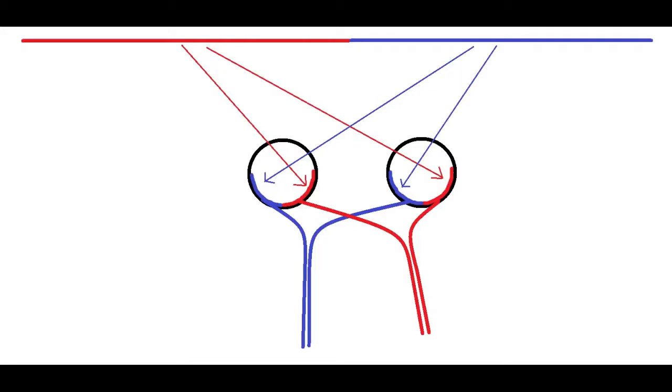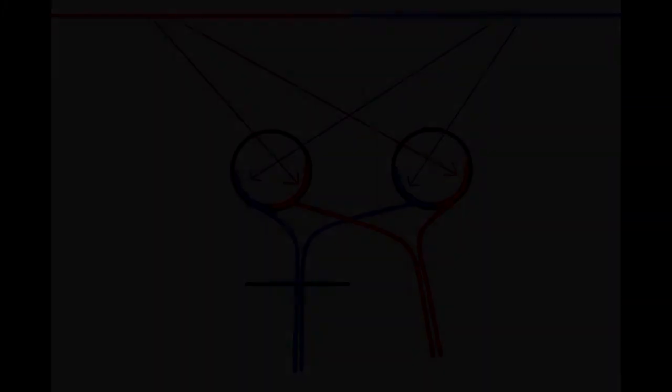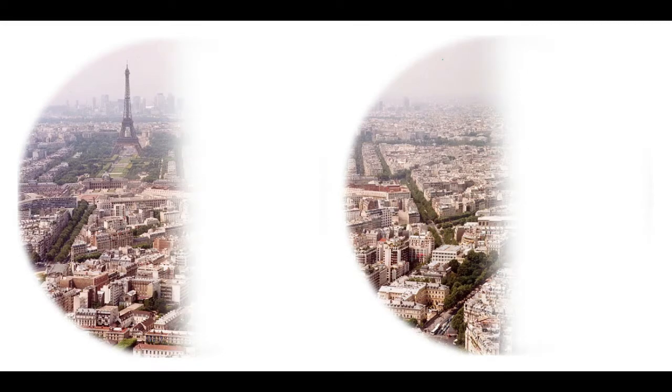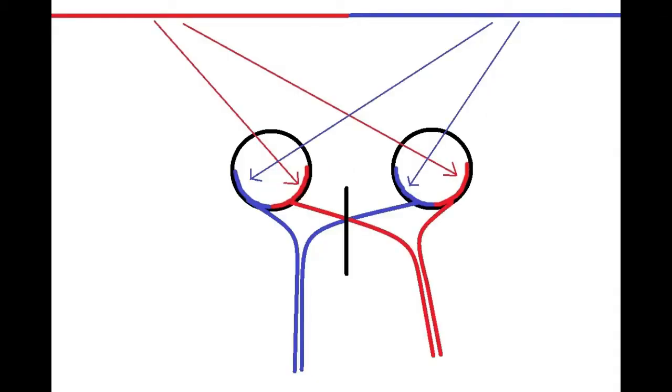Severing the optic nerve completely eliminates any visual information sent to the brain from that eye. But severing the optic tract — which occurs after the chiasm, the crossing — results in something slightly different. Light coming from the right side hits the left side of both eyes, and that information gets sent to the left side of the brain, and vice versa. So if you were to sever the left optic tract, you would lose all visual information from the right half of your visual field. You could also sever at various parts of the optic chiasm to produce different effects, each yielding a distinct pattern of visual field loss.